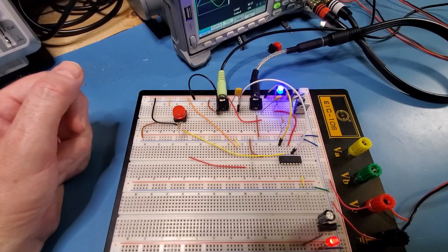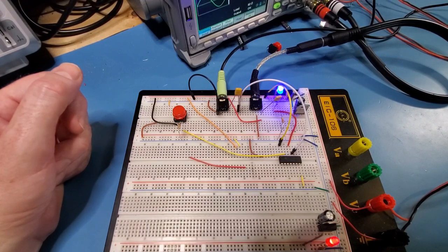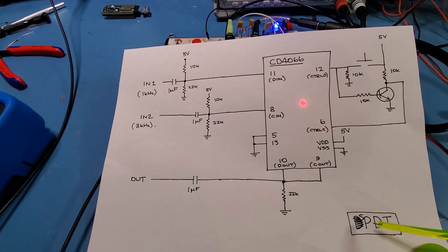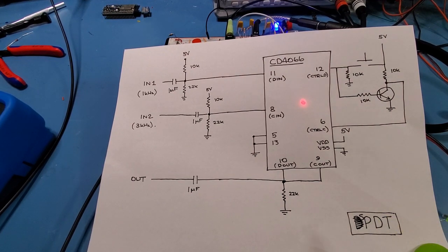So let's move on to next the single pole double throw. Okay so here's the modified circuit for single pole double throw. I actually got it wrong to start with.